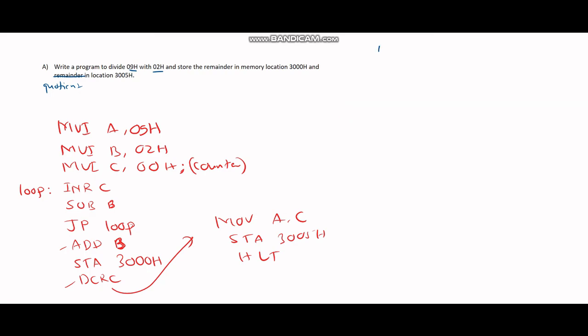Initially, accumulator is at 09, register B is at 02, and register C is at 00. In our first iteration, we increase the value of register to 01 from 00, basically increase it by 1.